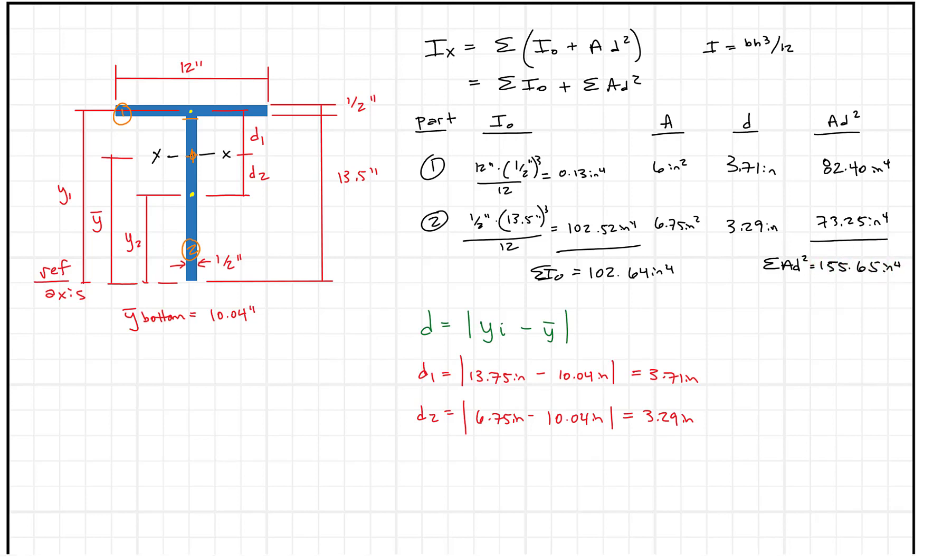So with my parallel axis theorem, what I know is IX is going to equal the sum of I naught plus the sum of Ad squared, these two terms, we add them together. And what that looks like is we're going to get IX equals 102.64 inches to the fourth plus 155.65 inches to the fourth. And we get the composite moment of inertia as 258.29 inches to the fourth. So there it is. There's our answer. We got it. We solved it.